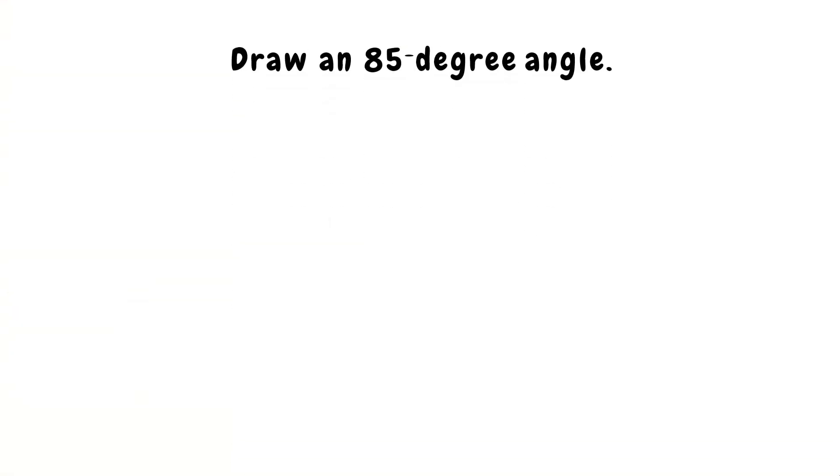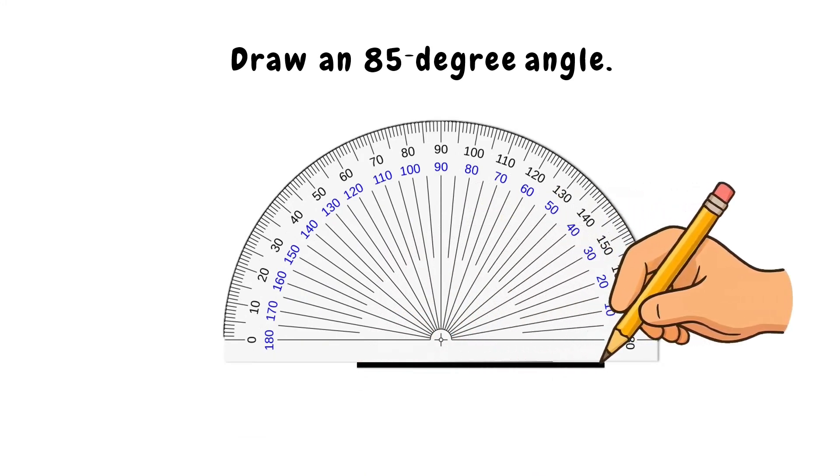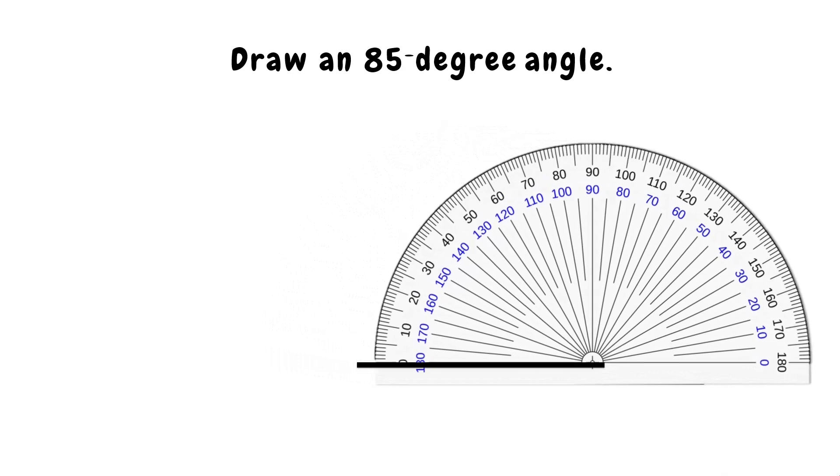First off, we have here 85 degree angle. First thing that you need to do is to draw a straight line. This will be the one arm or ray of our angle. Next, place the center of the protractor on the end point with the ray pointing at 0 degrees.